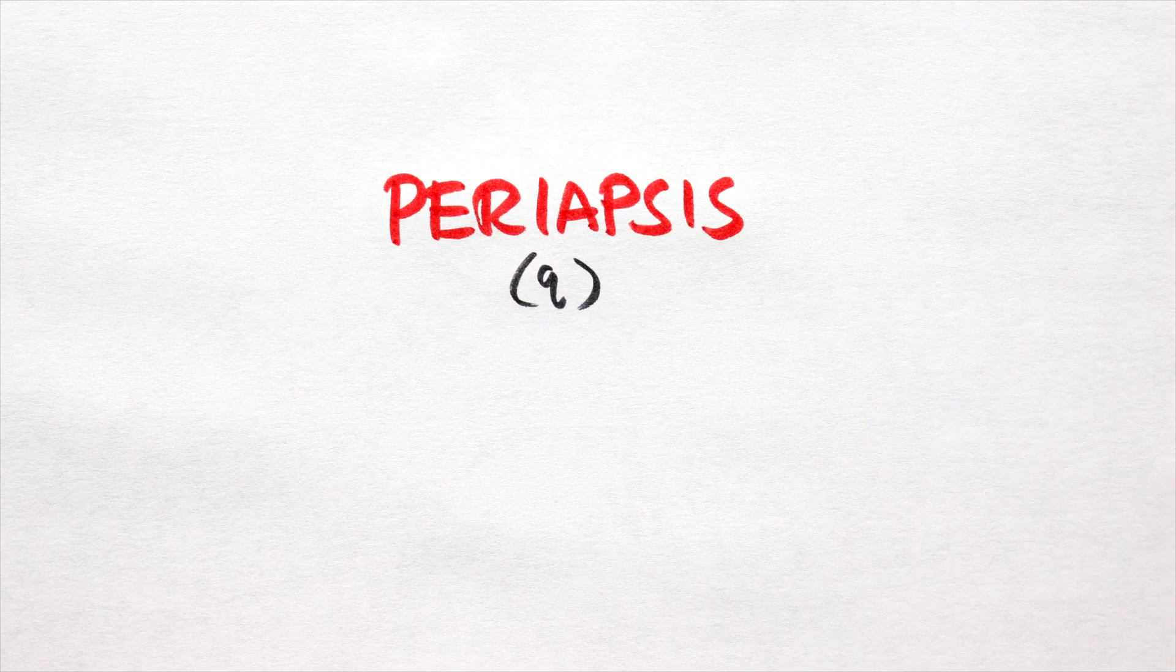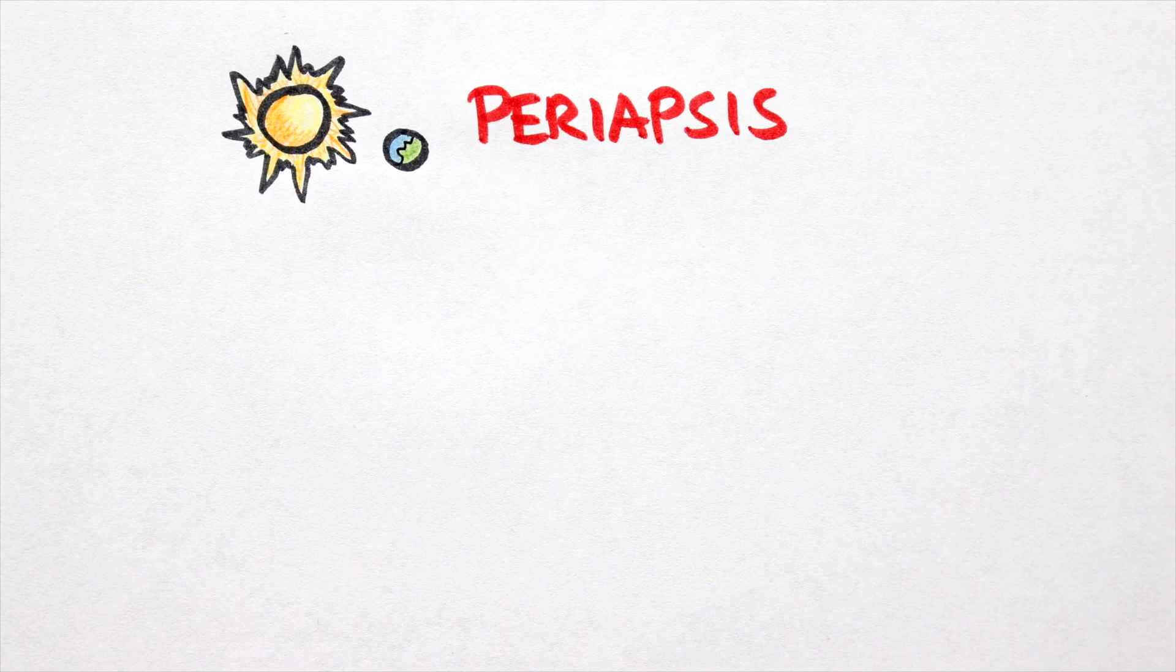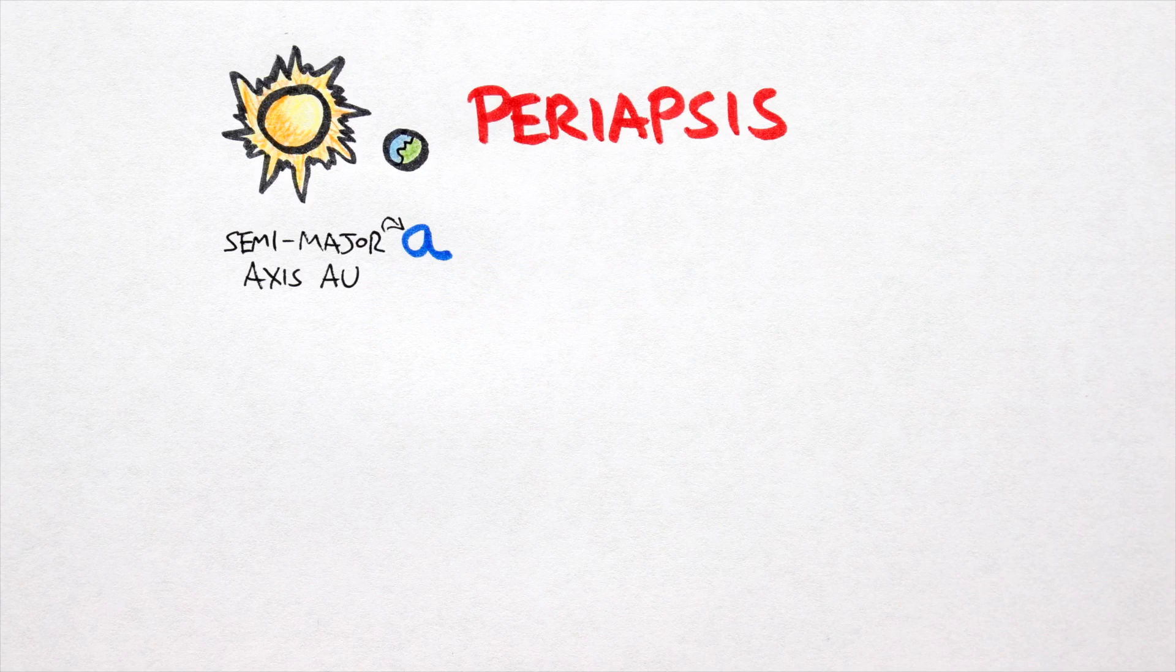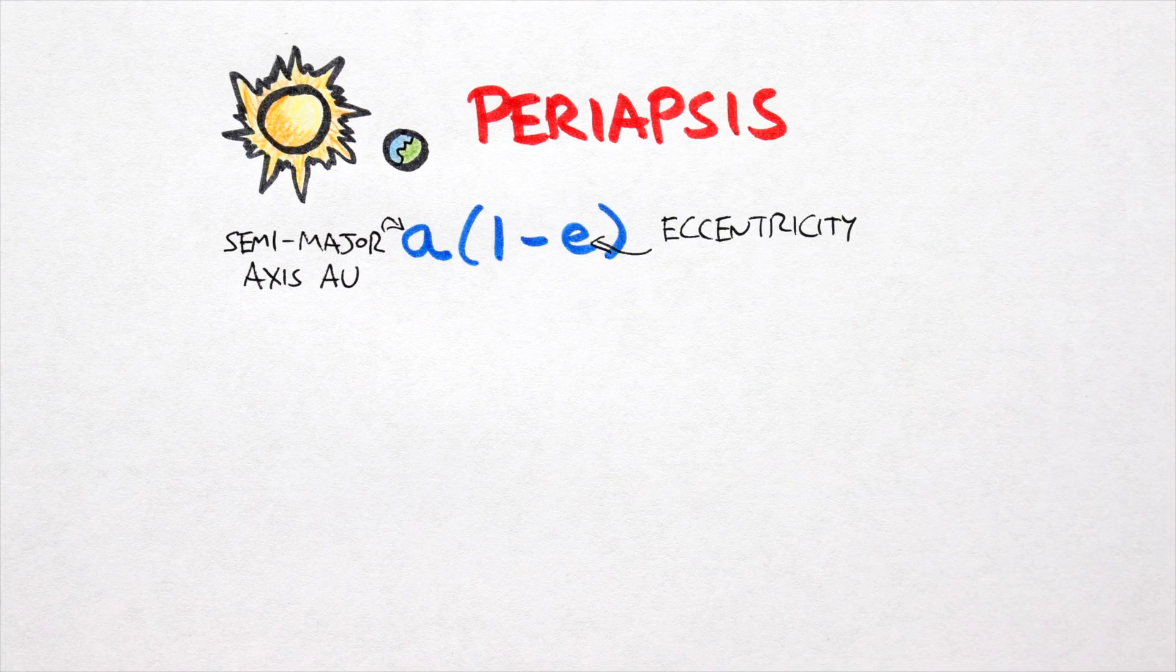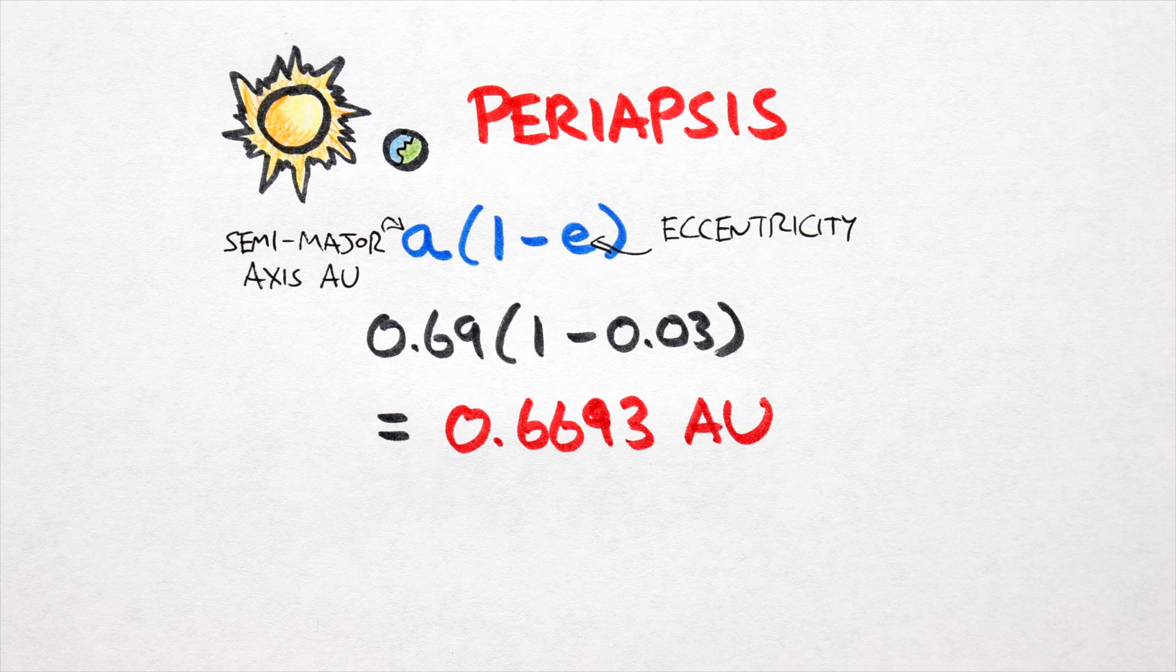Periapsis and Apoapsis. The periapsis, the closest our planet will get to its star, will be given, as always, by A, the semi-major axis, multiplied by 1 minus the eccentricity, which in this case turns out to be 0.6693 AU.